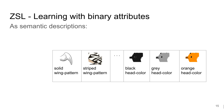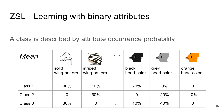For semantic descriptions, we use a set of predefined binary attributes. For example, the first attribute indicates whether or not a wing has a solid pattern. A class is described by attribute occurrence probability by averaging across raters.